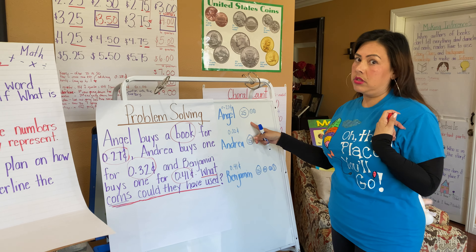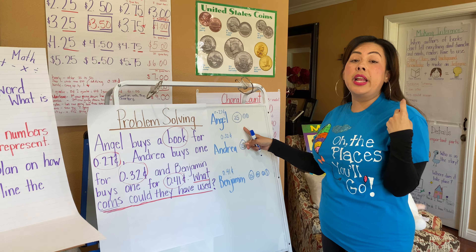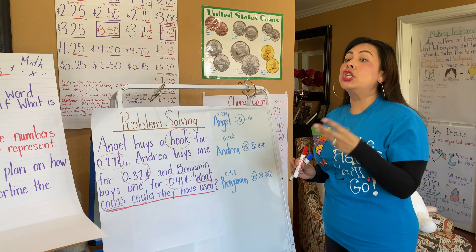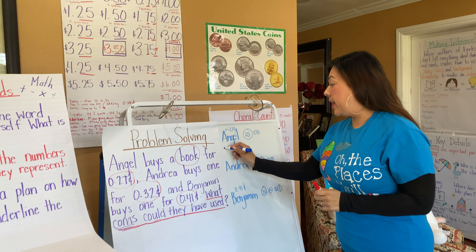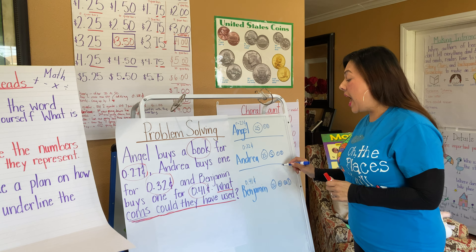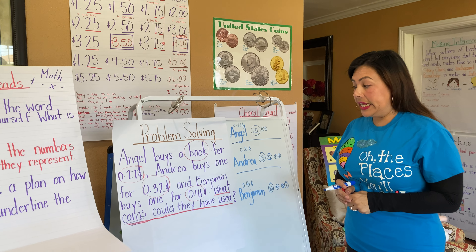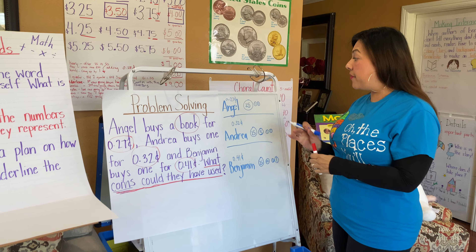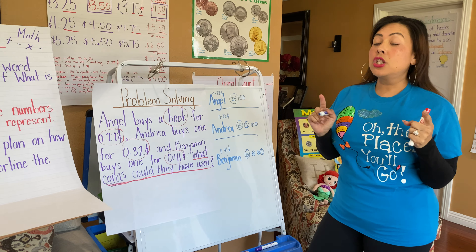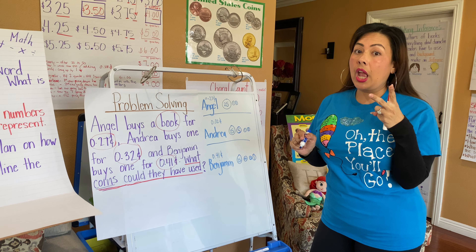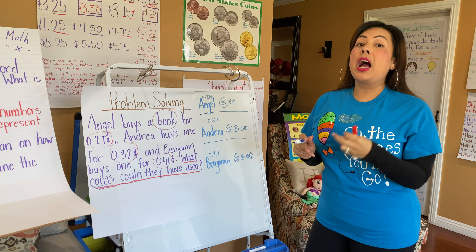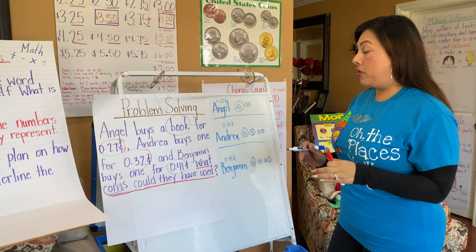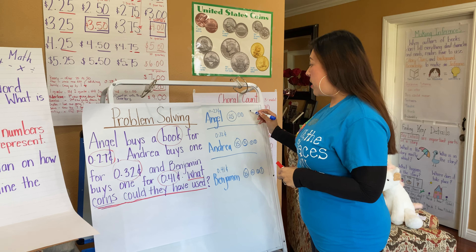Then Benjamin has 41 cents. I'm going to start with the quarter — 25. Then I can add a dime: 25 plus 10 is 35. Then add a nickel for 40, and then one penny for 41. So for Benjamin: quarter, dime, nickel, and one penny makes 41 cents.